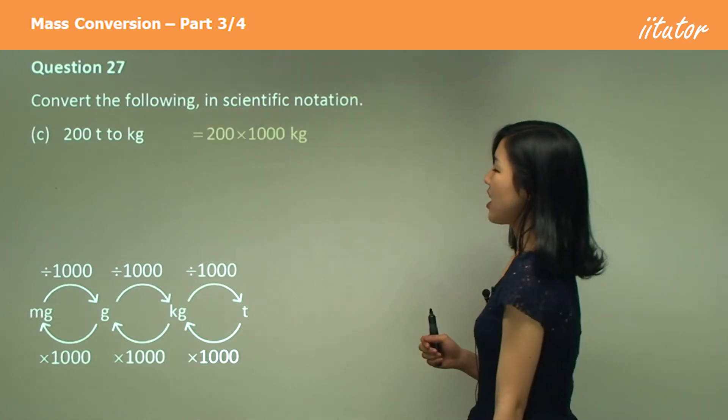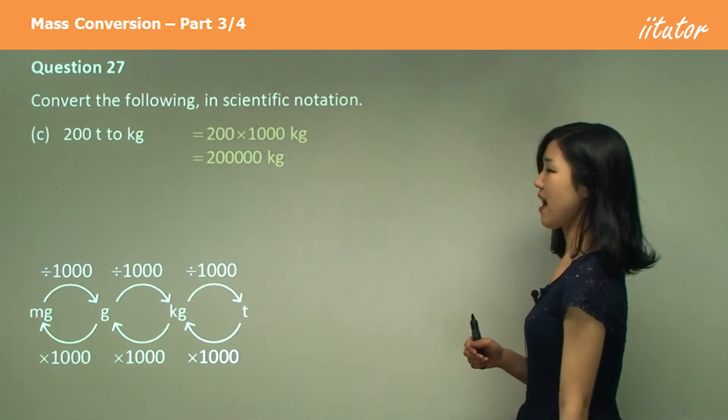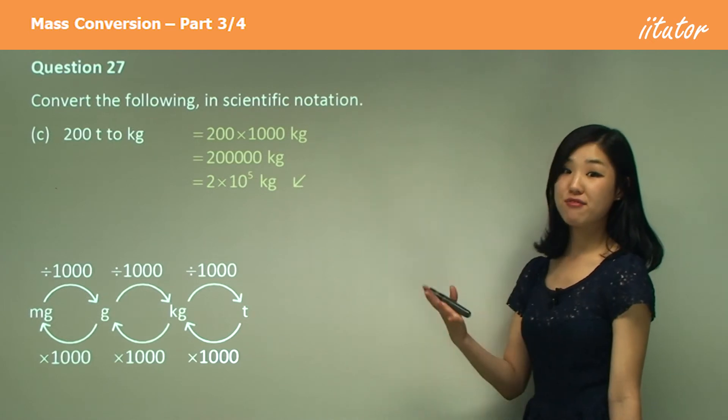And then again, times by a thousand, getting 20,000. So it's two times ten to the power of five, isn't it?